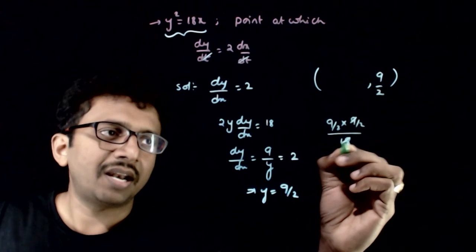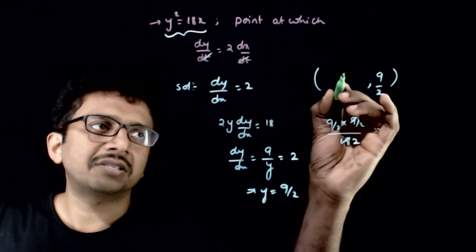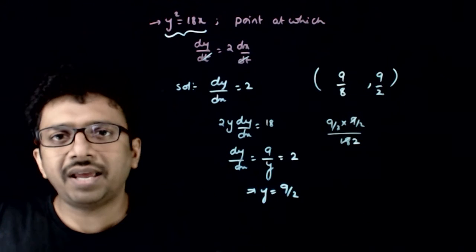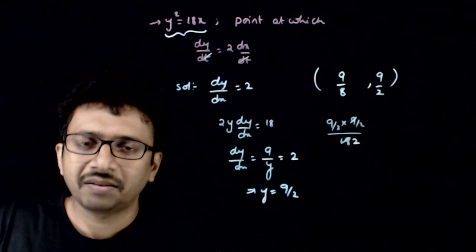It is 9... so you have 9 by 8, so 9 by 8 comma 9 by 2 is the answer. Thank you.